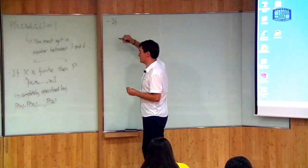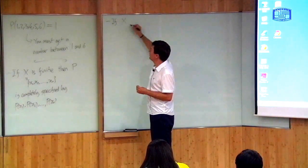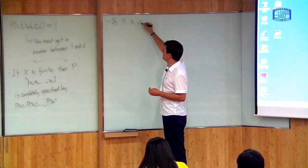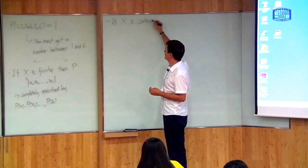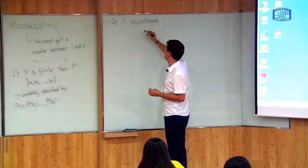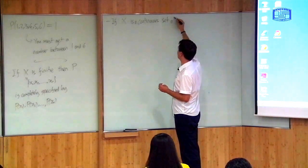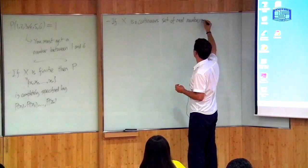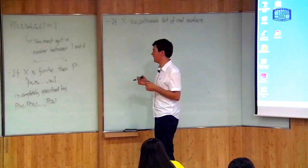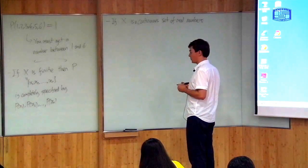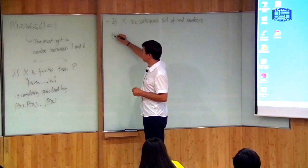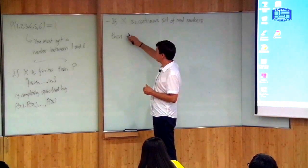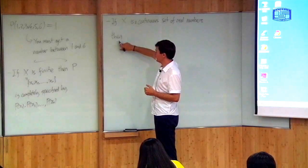But we can also define probabilities on infinite sets — sets with infinite numbers of elements. In particular, we're going to be interested in the case where X is continuous: a continuous set of real numbers. For example, X is an interval on the real line. Then we define P, the probability, in a slightly different way. We can do it using what's called a probability density function.